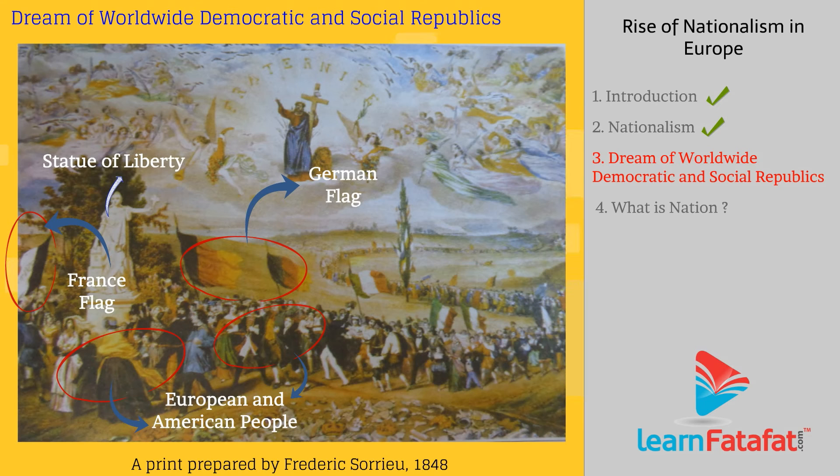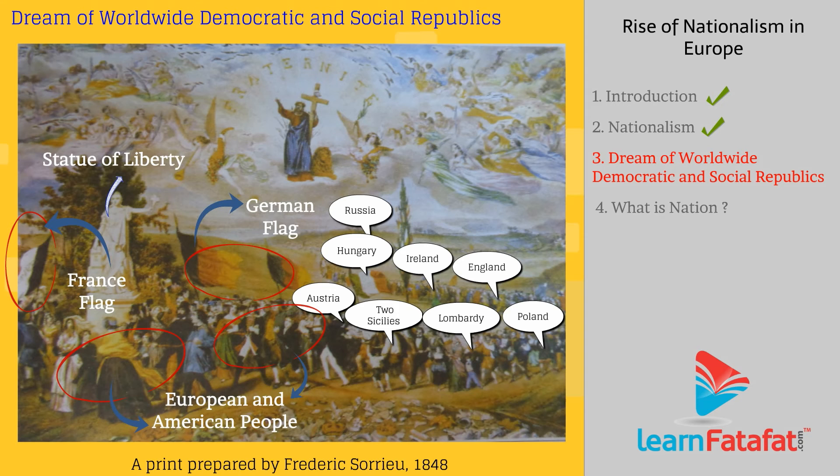France is followed by the Germans, who are identified through their black, red, and gold flag. Following the German people are Austria, the Kingdom of the Two Sicilies, Lombardy, Poland, England, Ireland, Hungary, and Russia.